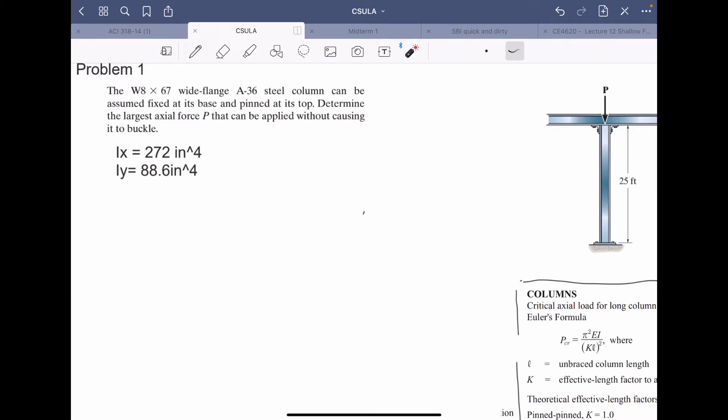So saying that the column can be developed to assume this fixed and pin base, pin at top, determine the largest axial force P that can be applied without causing buckling. So here's the thing, where we're going to focus on is keywords: can be assumed fixed at base and pinned at the top. Honestly within something of a problem like this, even if you did like fixed at the top pin at the base, for a problem like this something very simple, it actually won't change your answer.